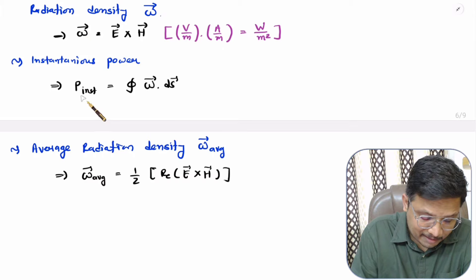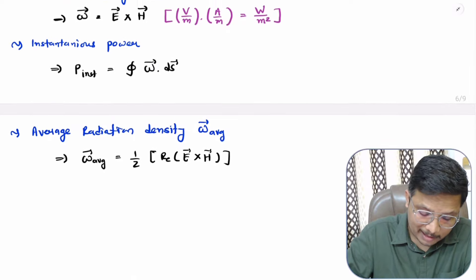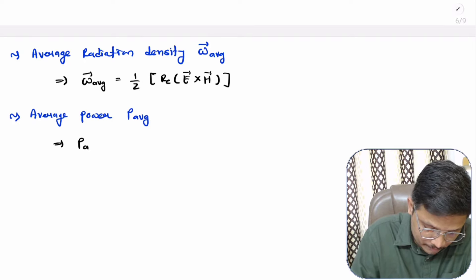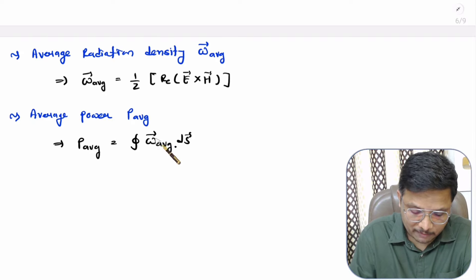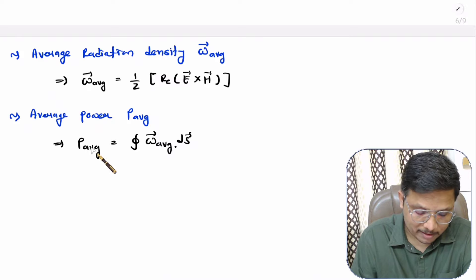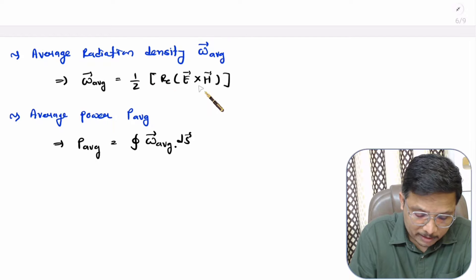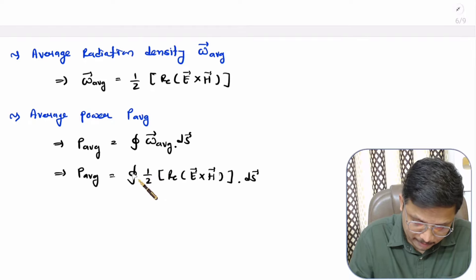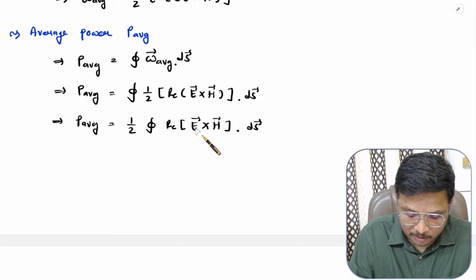With radiation density we can identify instantaneous power, but with average radiation density we can calculate average power. Average power P_average is calculated as the surface integration of average power density W_average. Where W_average equals half of the real component of E cross H, and since half is a constant it can be taken outside, giving P_average equals half of the surface integral of the real component of E cross H.